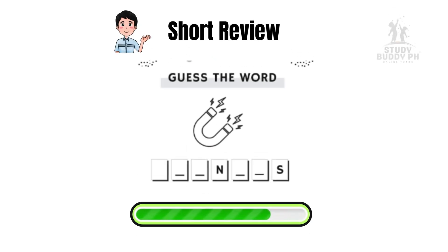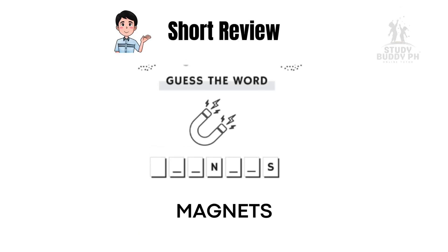It is a rock or metal that can attract certain metals, like iron. Correct, it's a magnet. Magnets show us another type of force — the magnetic force — which can pull or push objects even without touching them.